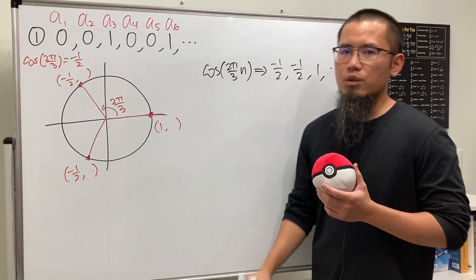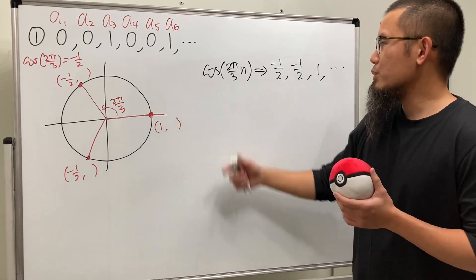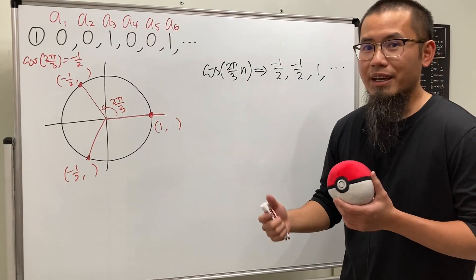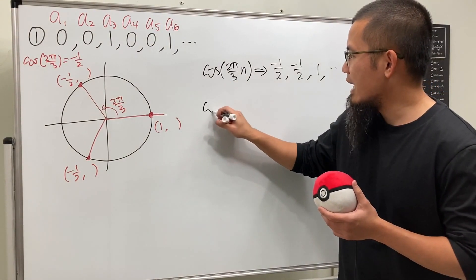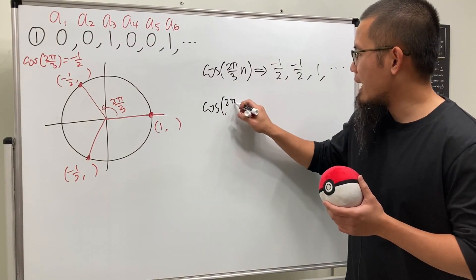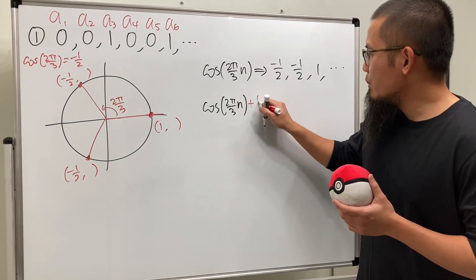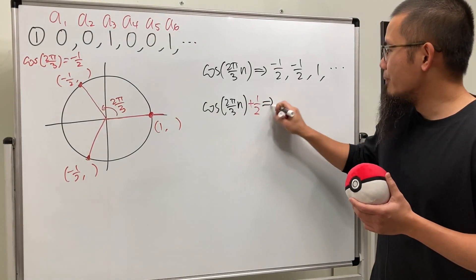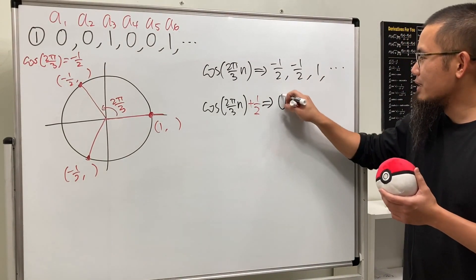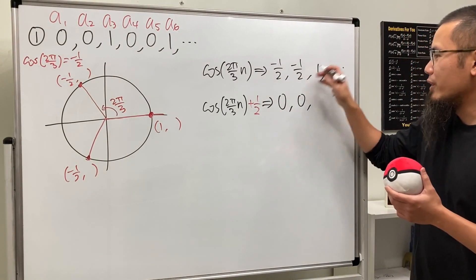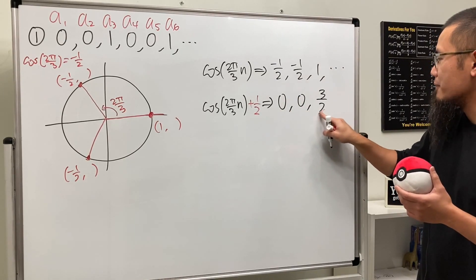But we don't want negative 1/2 — we want 0 and 0. So we can just add 1/2 to the formula. If we have cosine(2π/3·n) plus 1/2, you just add 1/2 to each term. This will produce 0, 0, and then 1/2 plus 1 is 3/2, and so on.